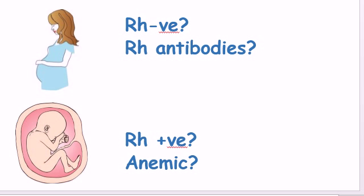The second question is answered by indirect Coombs antibodies. We consider any mother sensitized if she has titers of 1 over 16 or 1 over 32 or more.